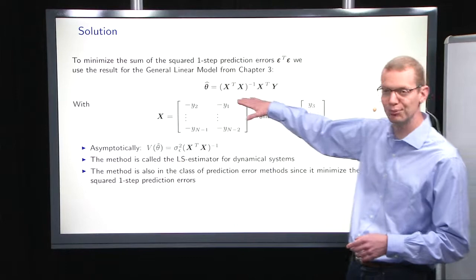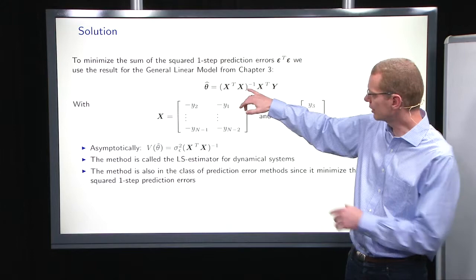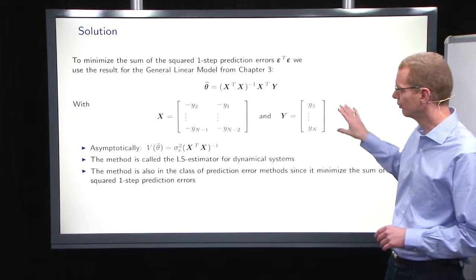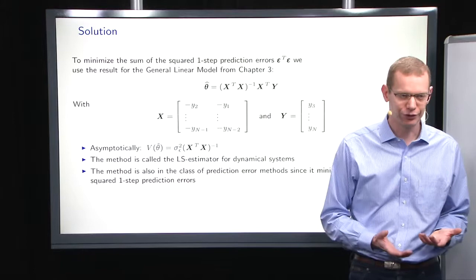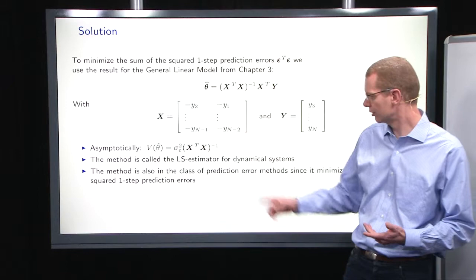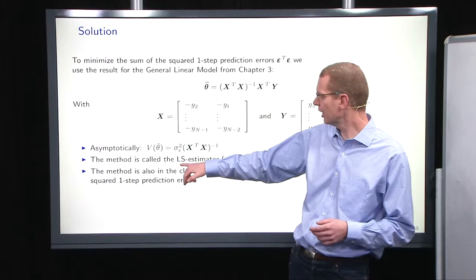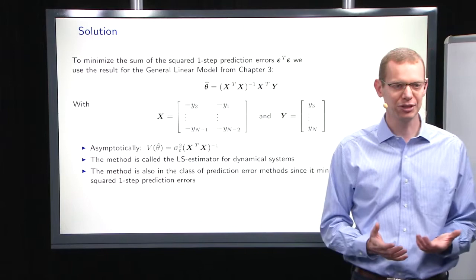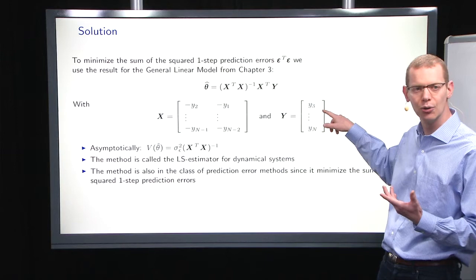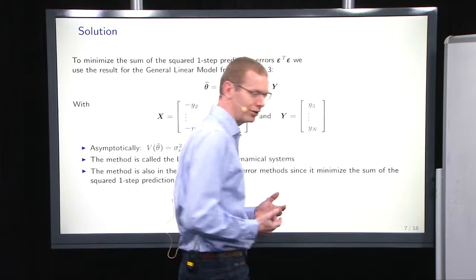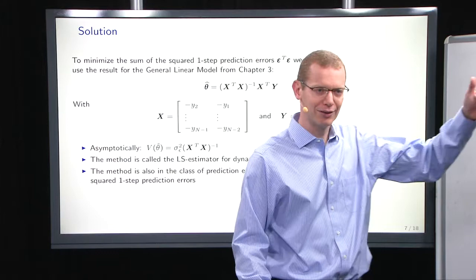The solution, as you probably remember, is that an estimate of theta-hat is X-transpose X inverse X-transpose Y. With these definitions, the variance of the estimator asymptotically is given as an estimate of sigma-epsilon-squared multiplied by X-transpose X inverse. So that's the precision that we have there. This is the least squares estimator, because that's what we solved. But we also look at one-step prediction errors, so it's also in the class of prediction error methods. And we should notice that the first observation we use is Y3, so we are conditioning on the first two — it's also a conditioning method.